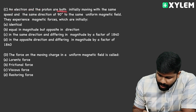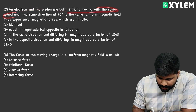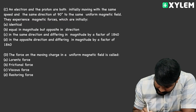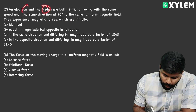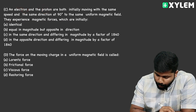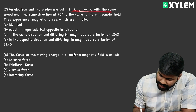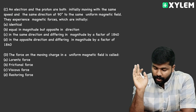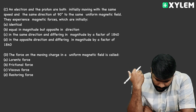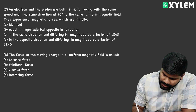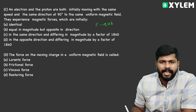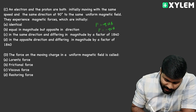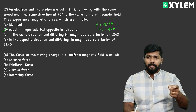An electron and a proton are both initially moving at the same speed in the same direction, at 90° to a uniform magnetic field. They experience magnetic forces. The force is F equals QVB at maximum (90°). Since charge magnitude is the same but sign differs, the forces are equal in magnitude but opposite in direction.